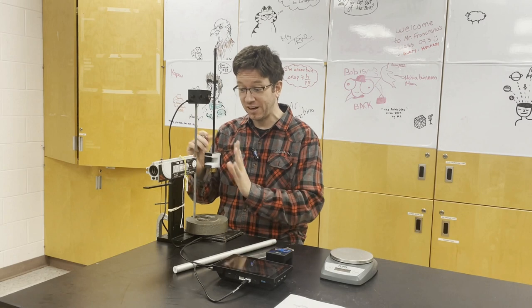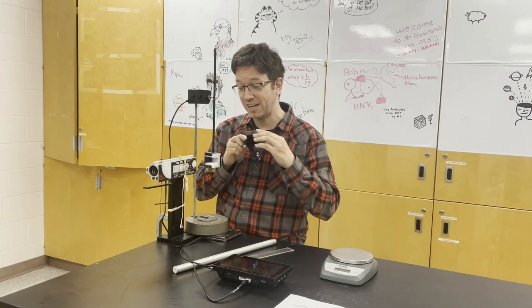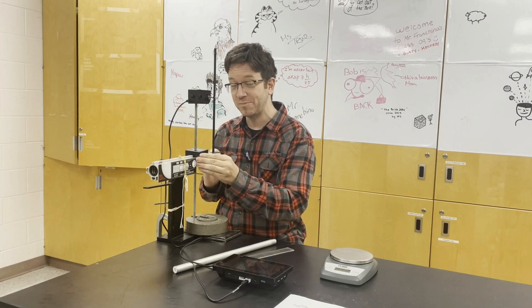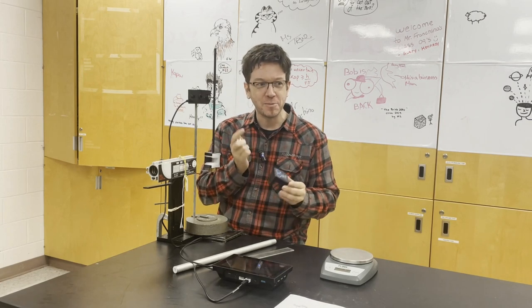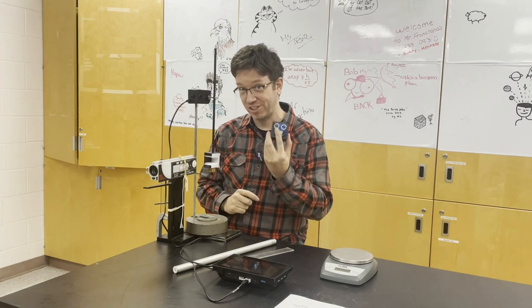Now before we do our experiment, what we're going to do first is use this photogate timer, which is going to directly measure the speed of the ball. This way we can compare what we get with the ballistic pendulum with what it actually is.